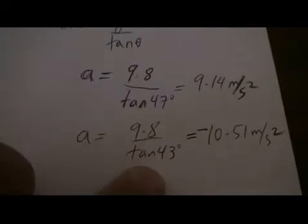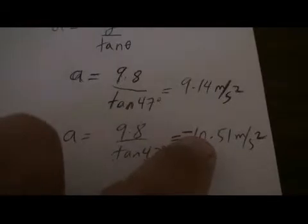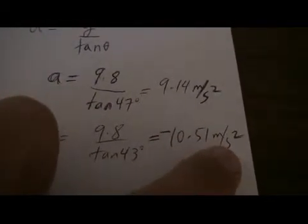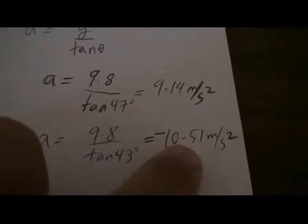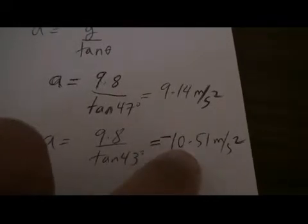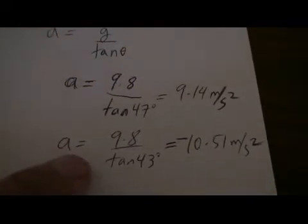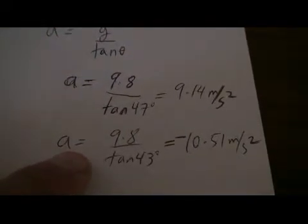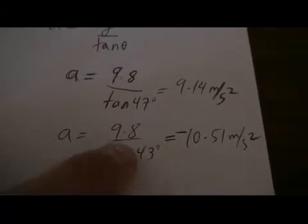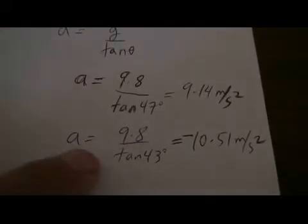The deceleration of the car was 9.8 over tan 43, and I'm just going to add a negative here because it's a deceleration, it was 10.51 meters per second squared. That one I could have even increased more if I had gone faster and braked very hard. So you could see this is a technique of just pretty much, as long as you have something hanging from the car that's a free pendulum, as long as you determine the angle to which it rises, you can calculate the acceleration or deceleration of the car.